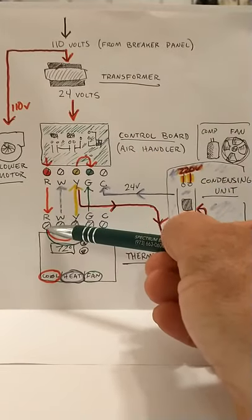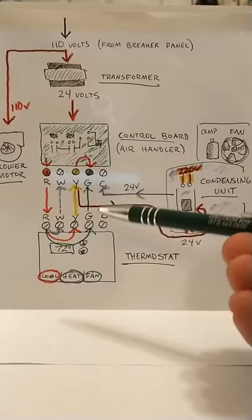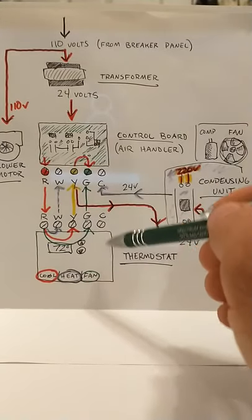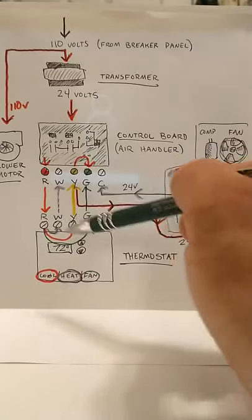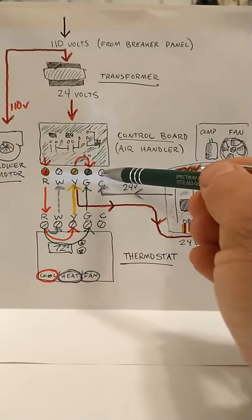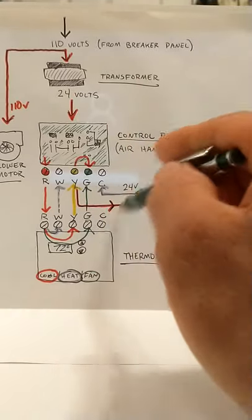So when your system is off, your 24 volts kind of stops right there and it doesn't really go anywhere. Sometimes you might have a thermostat that actually runs off of 24 volts instead of batteries. So you will have a blue wire, for example, going for your common at your thermostat to your common at your air handler, and that's just the 24 volts that the thermostat itself runs off of.